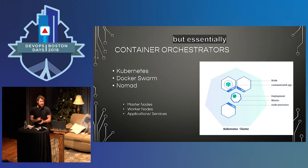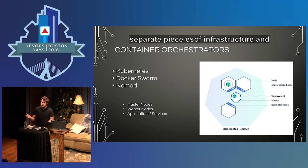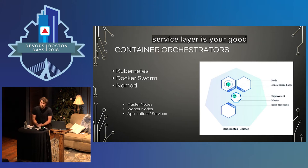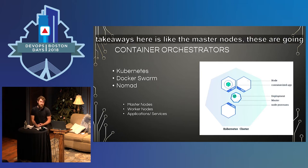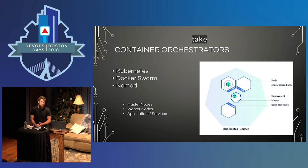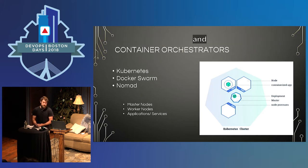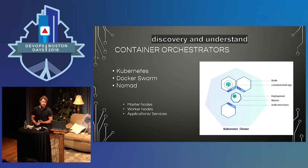The architecture has master nodes, worker nodes, and the application service layer. The master nodes and worker nodes are separate pieces of infrastructure, and the container service layer is your Docker containers. The master nodes are the heart and brain of the cluster — if those fail, your entire cluster will fail. This is where routing logic, service discovery, and all the state of your cluster is held. The worker nodes are where your containers are actually deployed — they scale up and down and need additional software to connect to the master nodes, do service discovery, understand what containers are running, what ports they're on, and send health checks back to the masters.